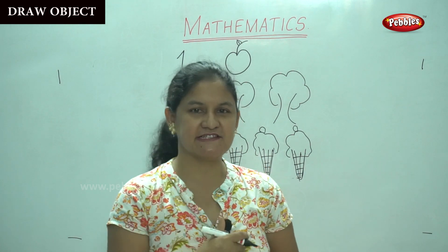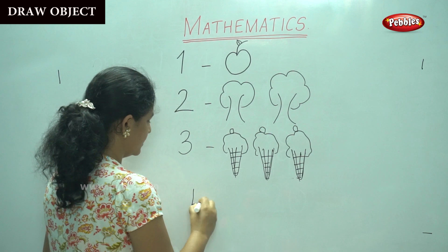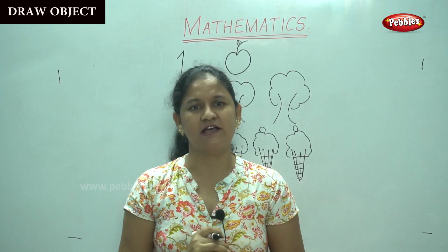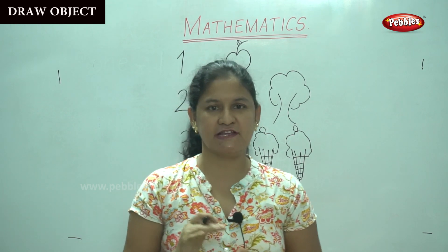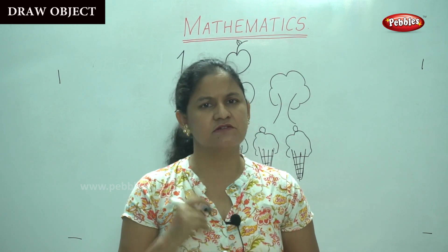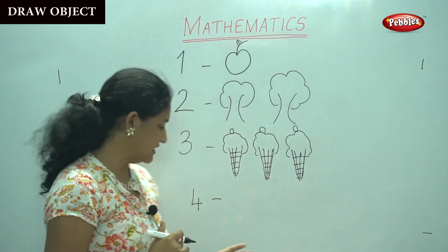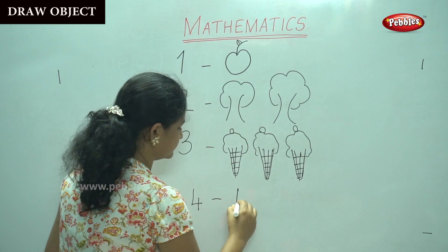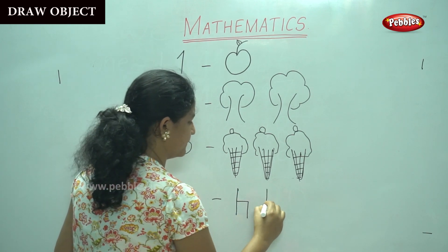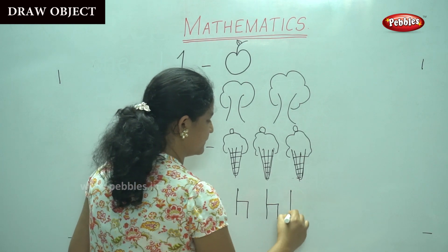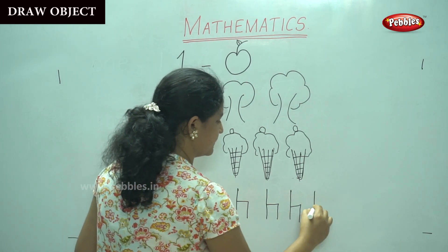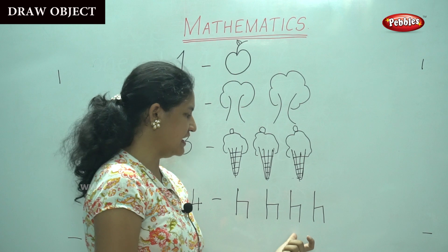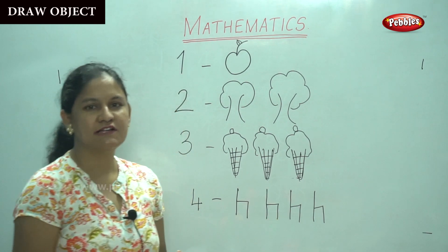Shall we move on to the next number? Number 4. What object can we draw for number 4? I am going to draw a chair. We all need a chair to sit down. So, how many chairs are we supposed to draw? It is number 4, so we will be drawing 4 chairs. 1, 2, 3, 4. So, how many chairs have I drawn? 1, 2, 3, 4 — I have drawn 4 chairs.